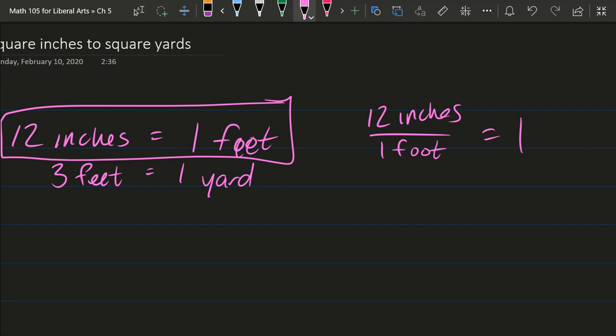You could also think about this as 12 inches per foot. So 12 inches per is divided by one foot.